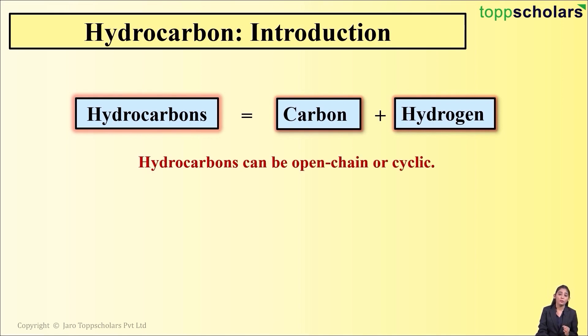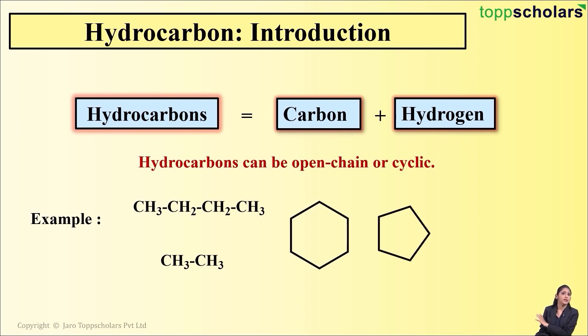These hydrocarbons can be open chain compounds or closed chain, that is cyclic compounds. Here we have two compounds which are open chain hydrocarbons, and here you can see we have two closed chain compounds - cyclic or ring compounds.